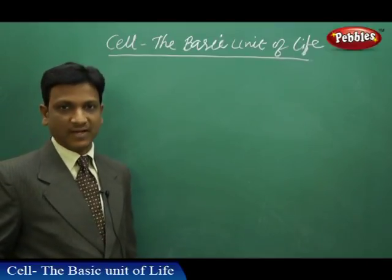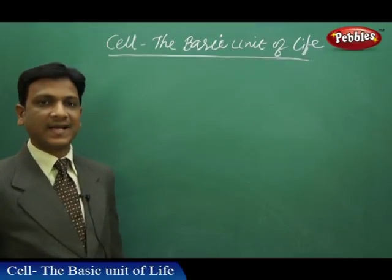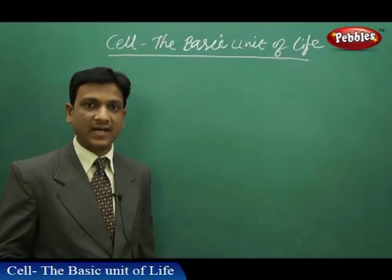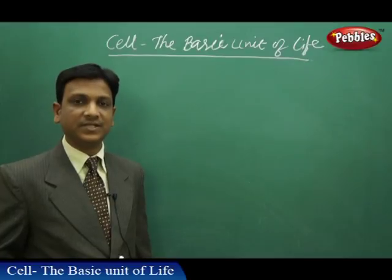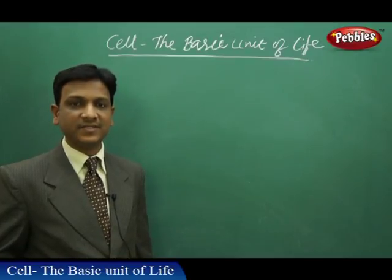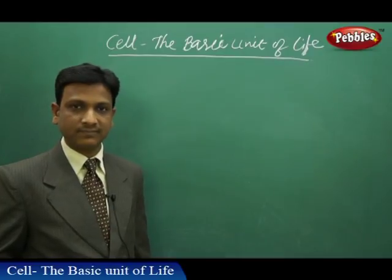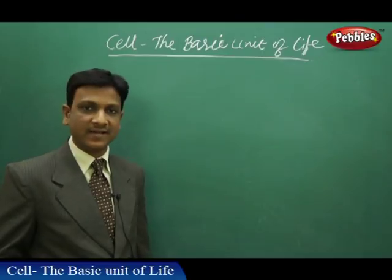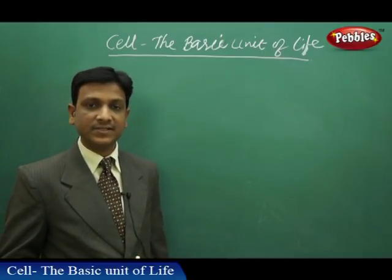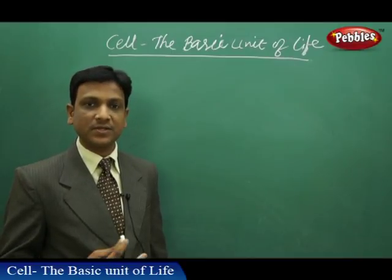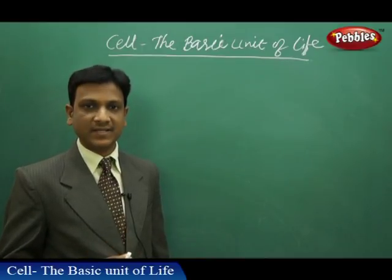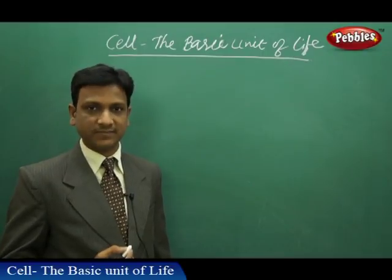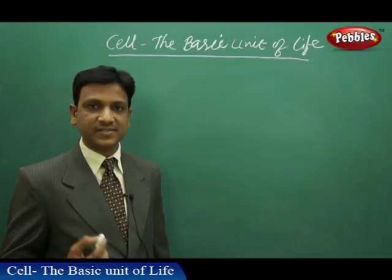Cell is the basic unit of life. If we see planet Earth, there are so many different kinds of organisms living together, coexisting and interacting with each other. We see a great diversity in the animal and plant kingdom. We know that there are huge plants like the redwood tree and the sequoia tree, and even pine trees — such huge, big trees. At the same time, we observe very tiny phytoplankton, small plants that live in water.